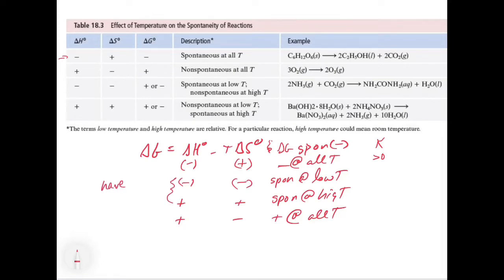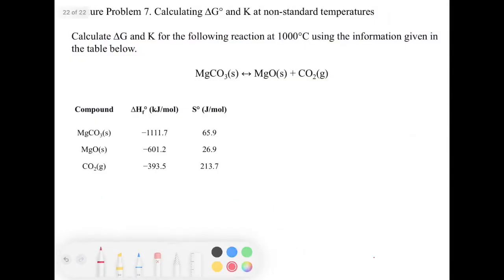What you'll notice is that the cases which depend on temperature have the same sign for delta H and delta S, while those that don't depend on temperature have opposite signs. This gives you a guide for thinking about temperature effects on spontaneity. Now let's look at a problem where we calculate delta G and K at non-standard temperatures quantitatively.